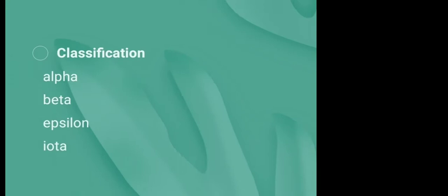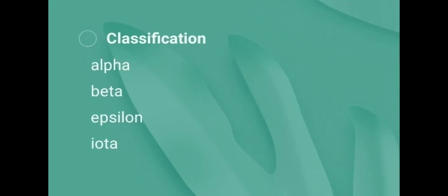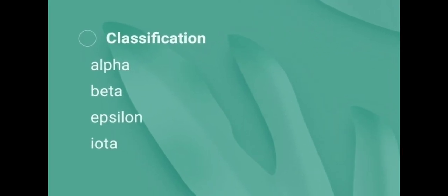Classification: Based on the toxins produced, Clostridium perfringens is classified into types alpha, beta, epsilon, and iota.